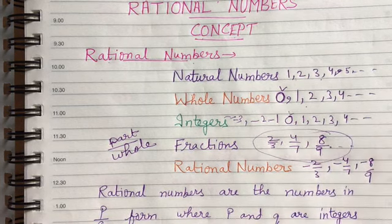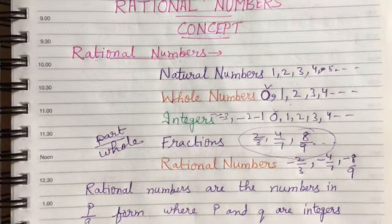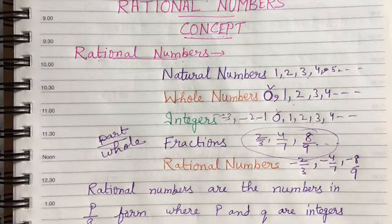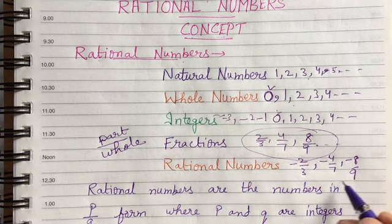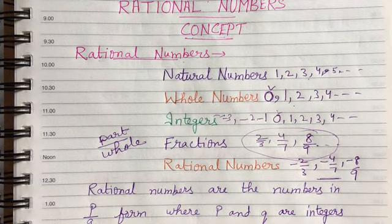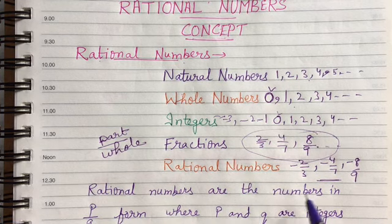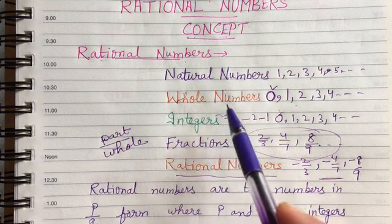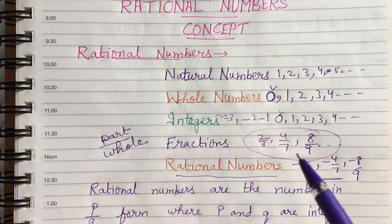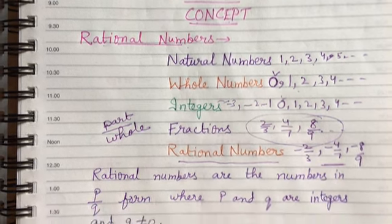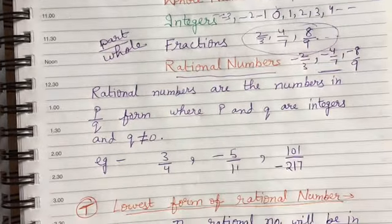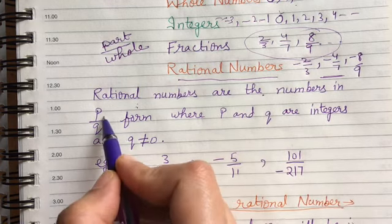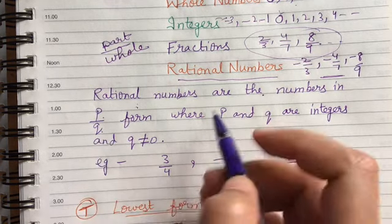In fractions we are taking only the positive part by whole, but many times we come across these kinds of numbers also. So where are we going to fit all these numbers? In rational numbers. So from natural numbers, whole numbers, integers, fractions — the next thing that comes into your syllabus is rational numbers.